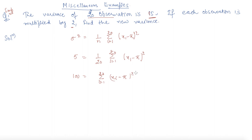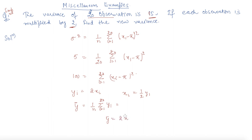Now notice that each observation is multiplied by 2. So I can write Yi equals 2Xi, and Xi equals 1 by 2 times Yi. The new mean Y-bar will be 1 by N summation i equal 1 to 20 Yi, which gives us Y-bar equals 2 times X-bar, or X-bar equals half of Y-bar. So now I will put the values of Xi and X-bar in terms of Y and Y-bar.